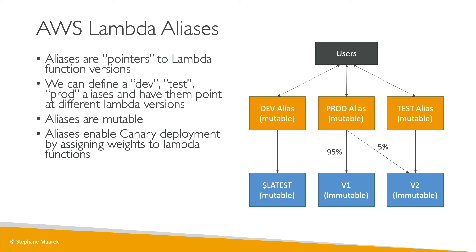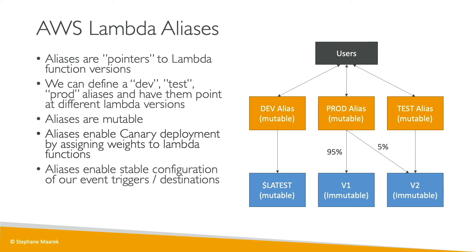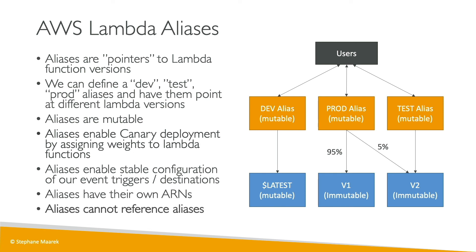Aliases enable stable configuration for our triggers or user destinations — they can be invoked stably but can point in the backend to whatever Lambda version we want. These aliases will get their own ARNs. One important thing to note: aliases cannot reference other aliases, they can only reference versions. This is something the exam may try to trick you on. Let's go into the hands-on to see how they work.